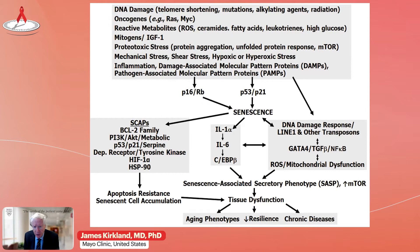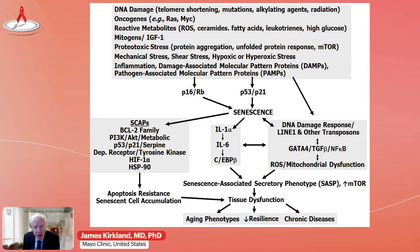Cellular senescence is a cell fate. It can occur at any point during life. It occurs across the vertebrates and even in some invertebrates. It is a response to damage — from repeated cell division, from developing cancers within cells, from mechanical or shear stress. Mechanical stress is the basis for senescent cells forming in the knee joint, for example, in osteoarthritis. It can be caused if neighboring cells die, by inflammation, and importantly, also by what we call PAMPs or pathogen-associated molecular pattern proteins — in other words, things associated with infections.